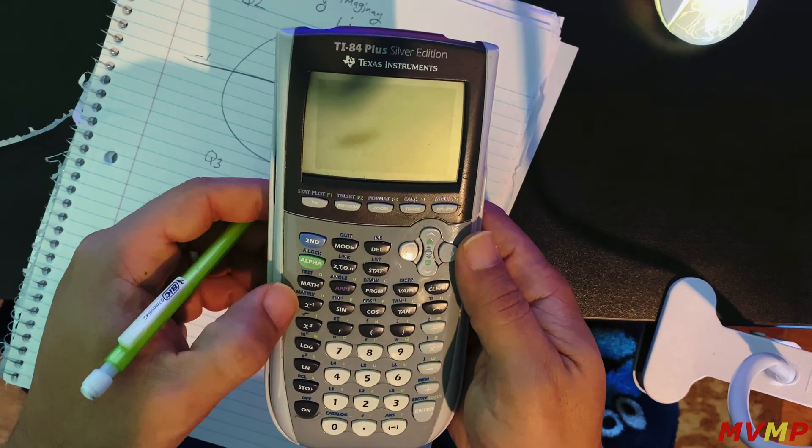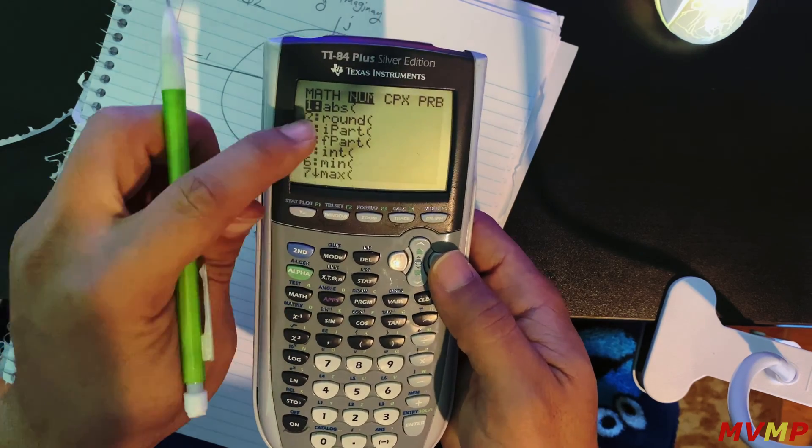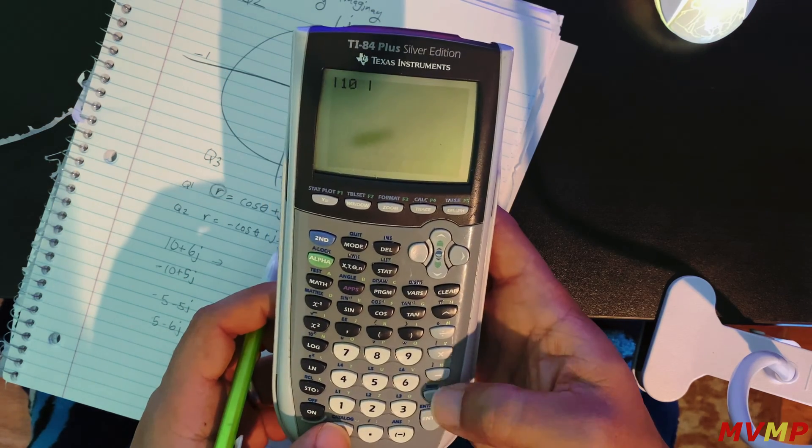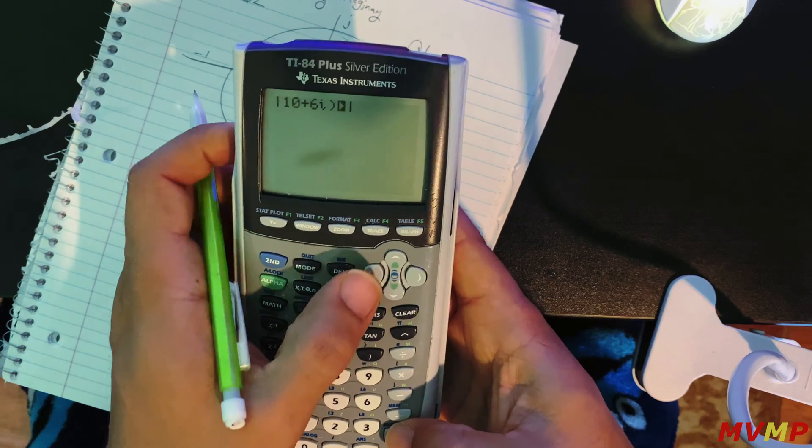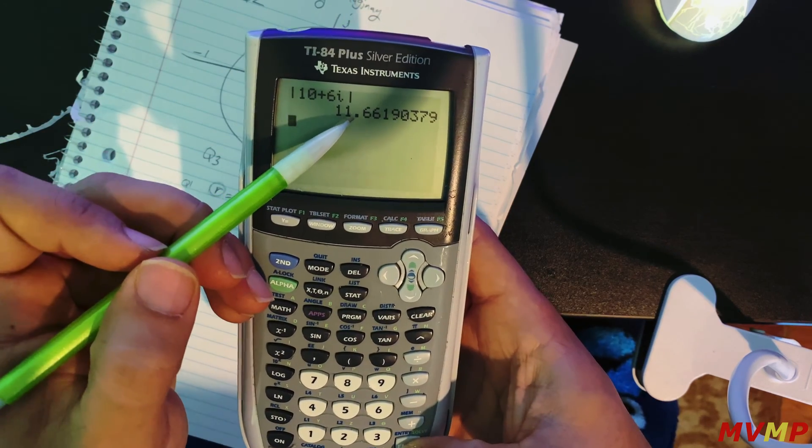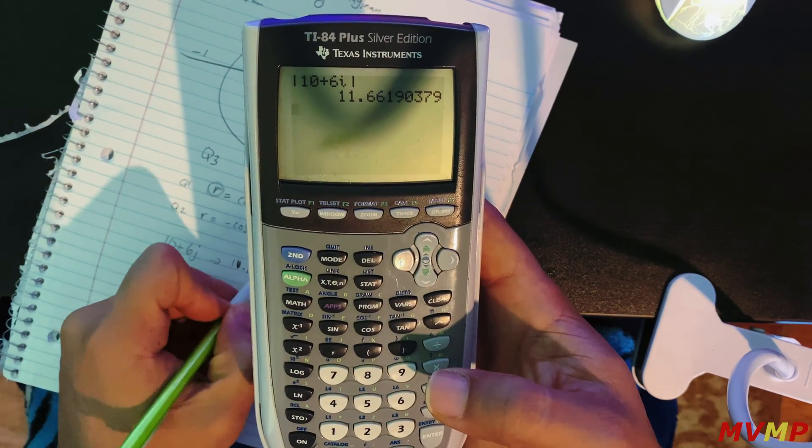So what you can do is actually go under math, go over the number, press on absolute, and you type the expression out. So you type in 10 plus 6, second i, oh you don't need that, and there you go you get your r value 11.6619.